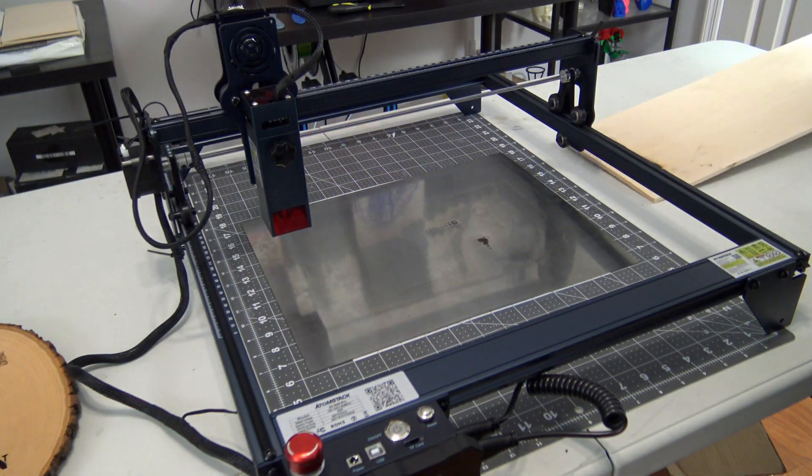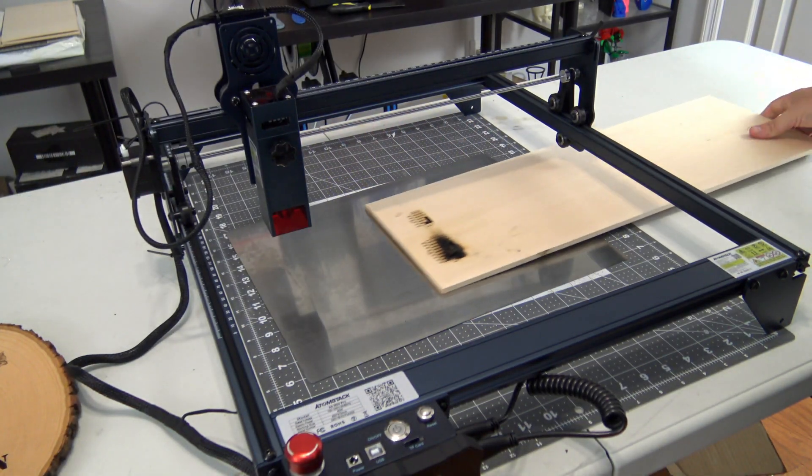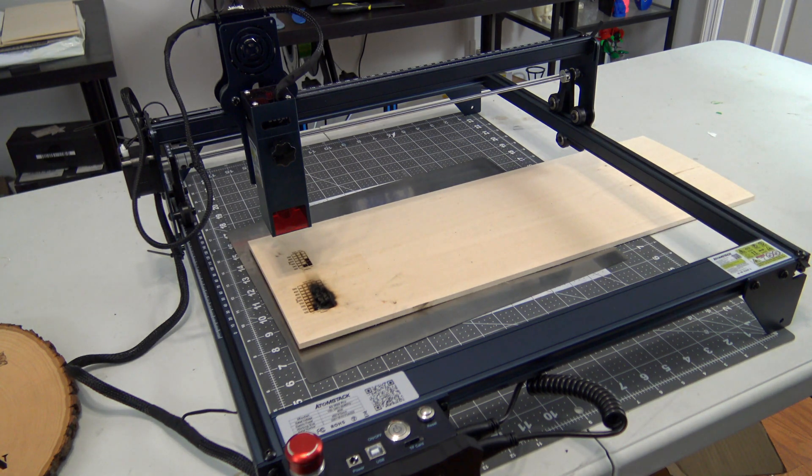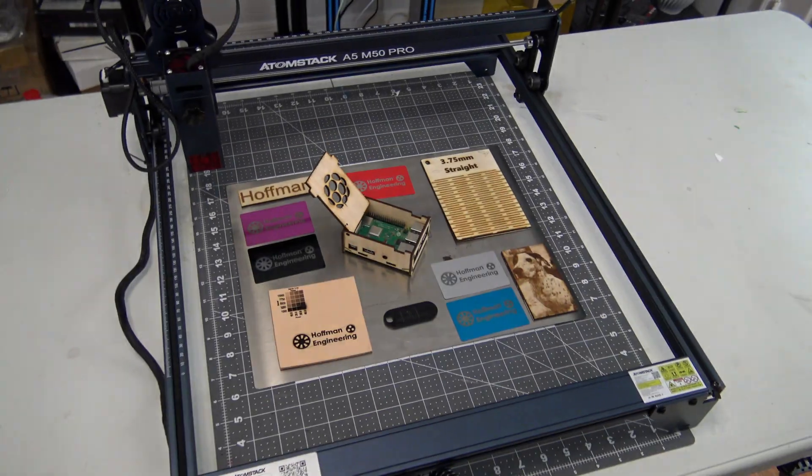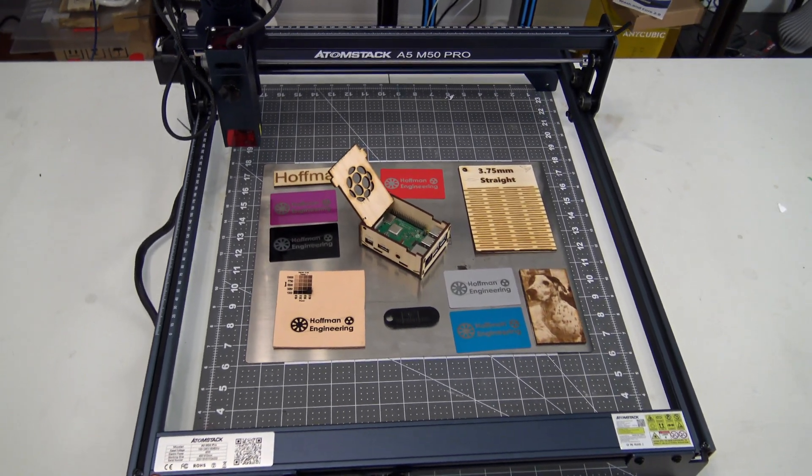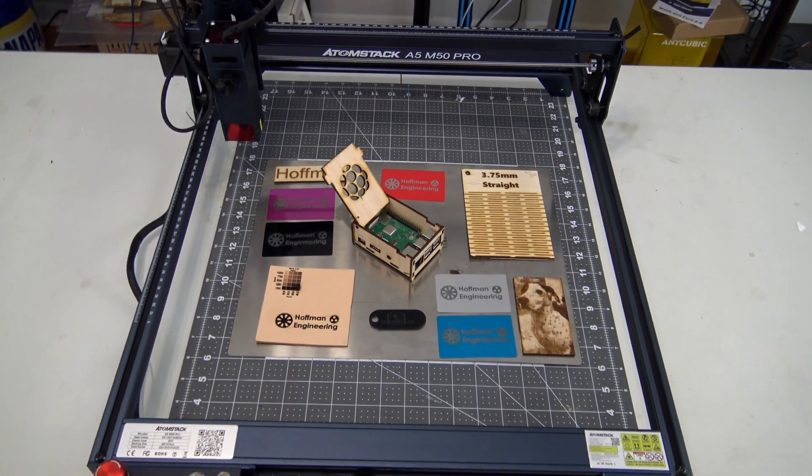It's great that the frame is raised off of the surface because you can slide larger pieces of stock through the sides. You're not limited to just 400mm square pieces of stock. Atomstack advertises that this laser can handle a variety of materials, so I wanted to try as many as possible.